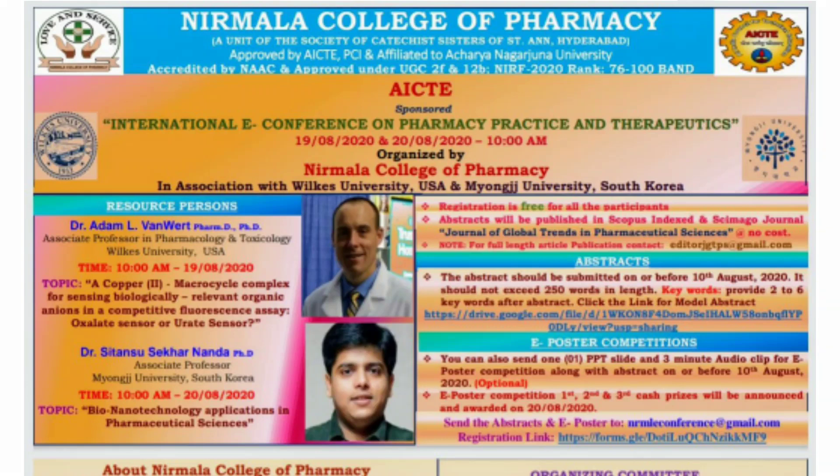Getting into registration details: the registration is free for all participants, and abstracts will be published in a Scopus-indexed and SCImago journal — Journal of Global Trends in Pharmaceutical Sciences — at no cost. They are also inviting abstracts; the abstract should be submitted on or before 10th August 2020, should not exceed 250 words in length, and should include two to six keywords.